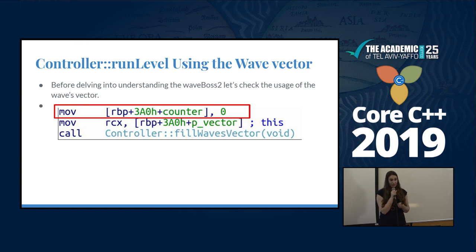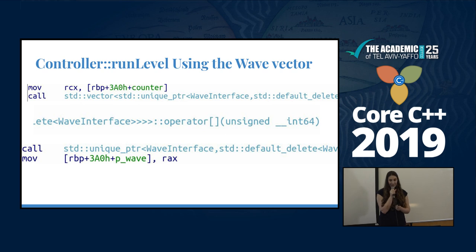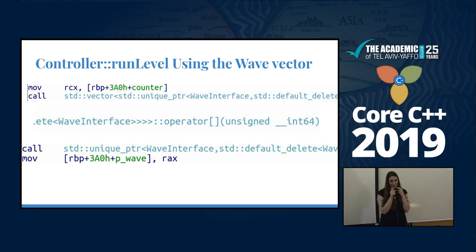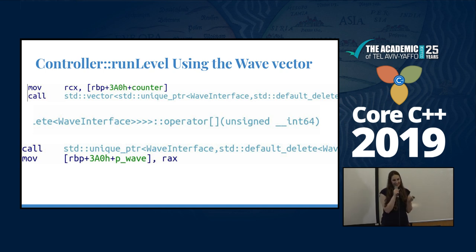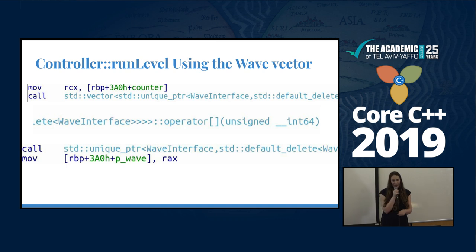At the beginning, we can see there is a counter initialized with zero, and afterward you have the 'fill vector' function. What happens inside is that it uses a counter to iterate over the vector of unique pointer objects. Then it puts the current object into a local variable called 'p wave', which is stored on the stack.